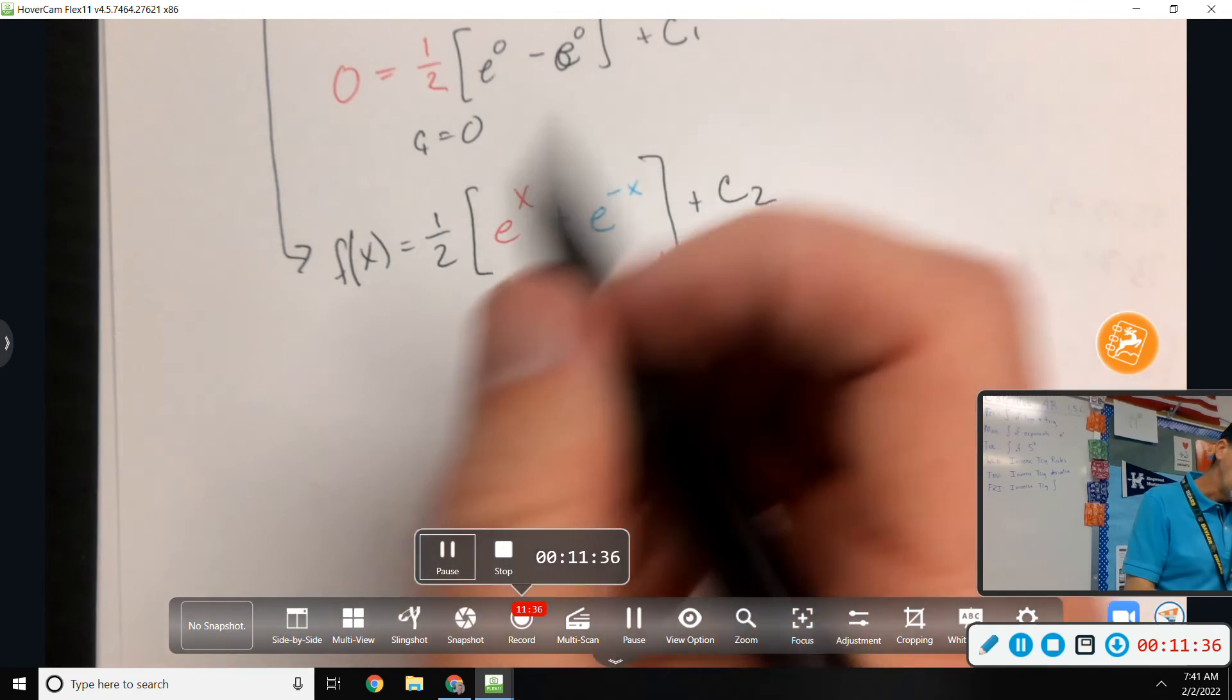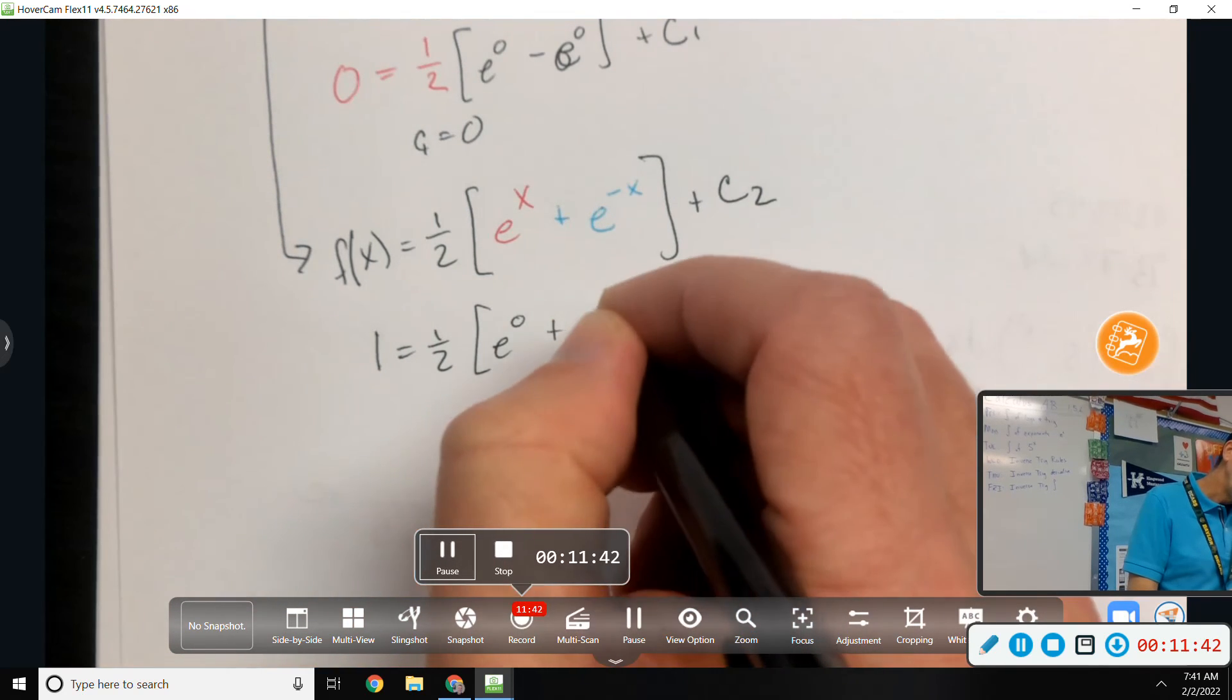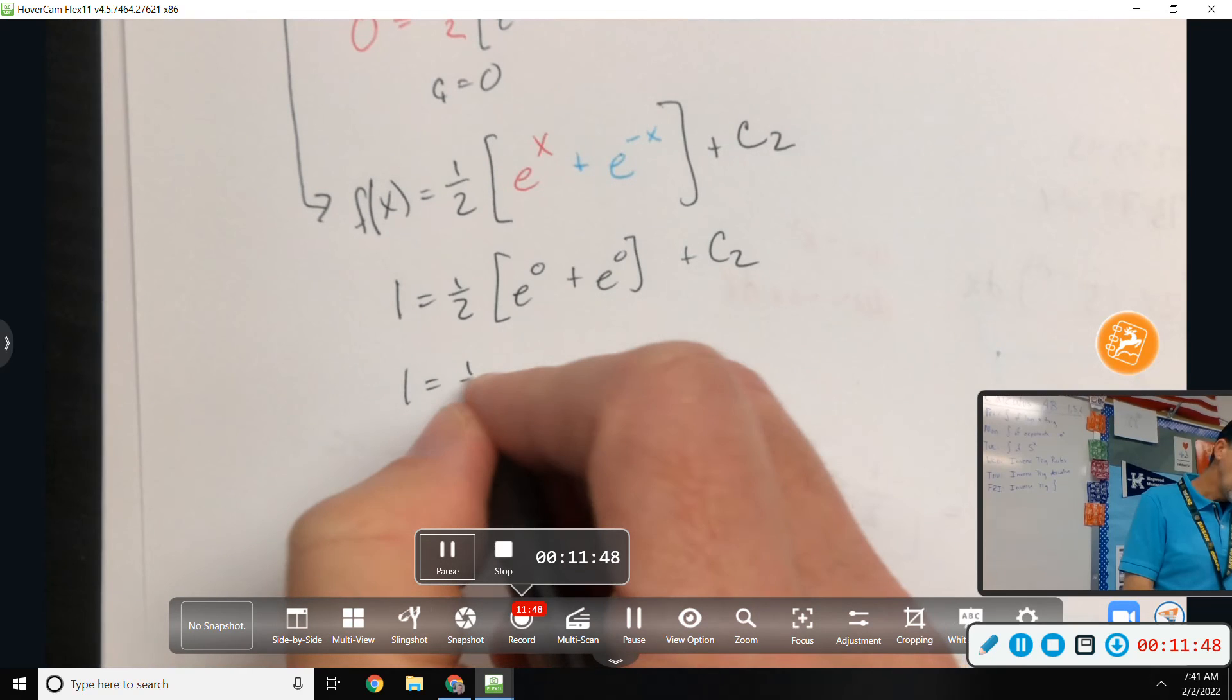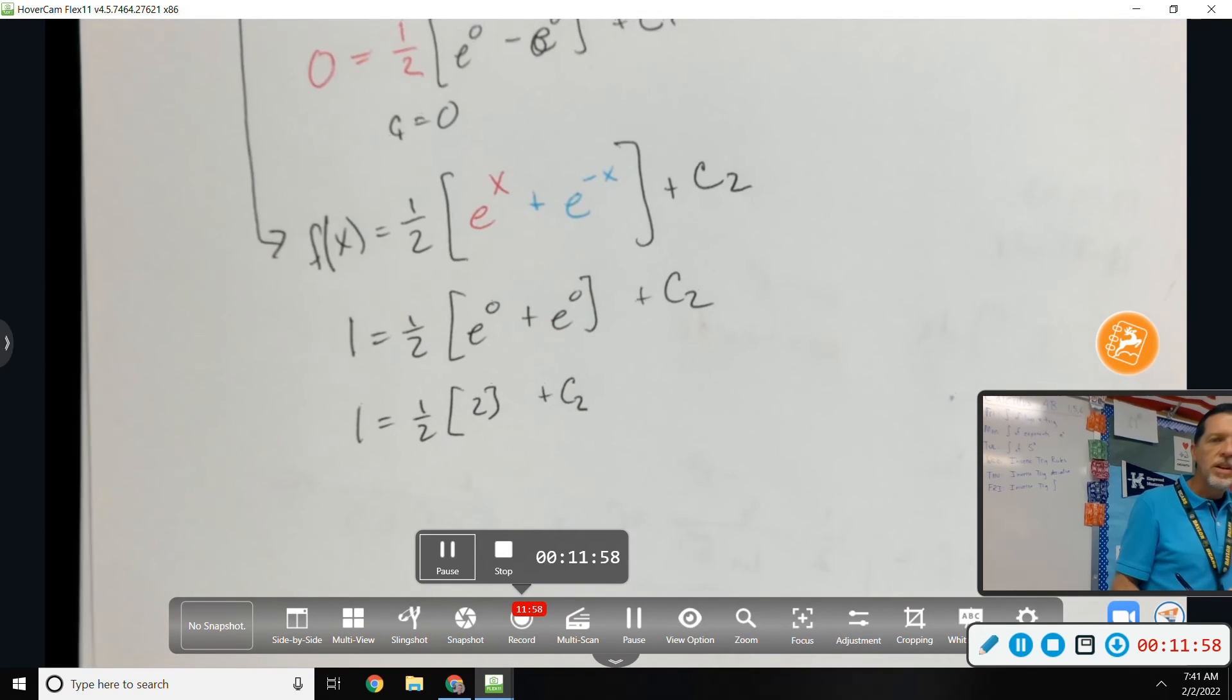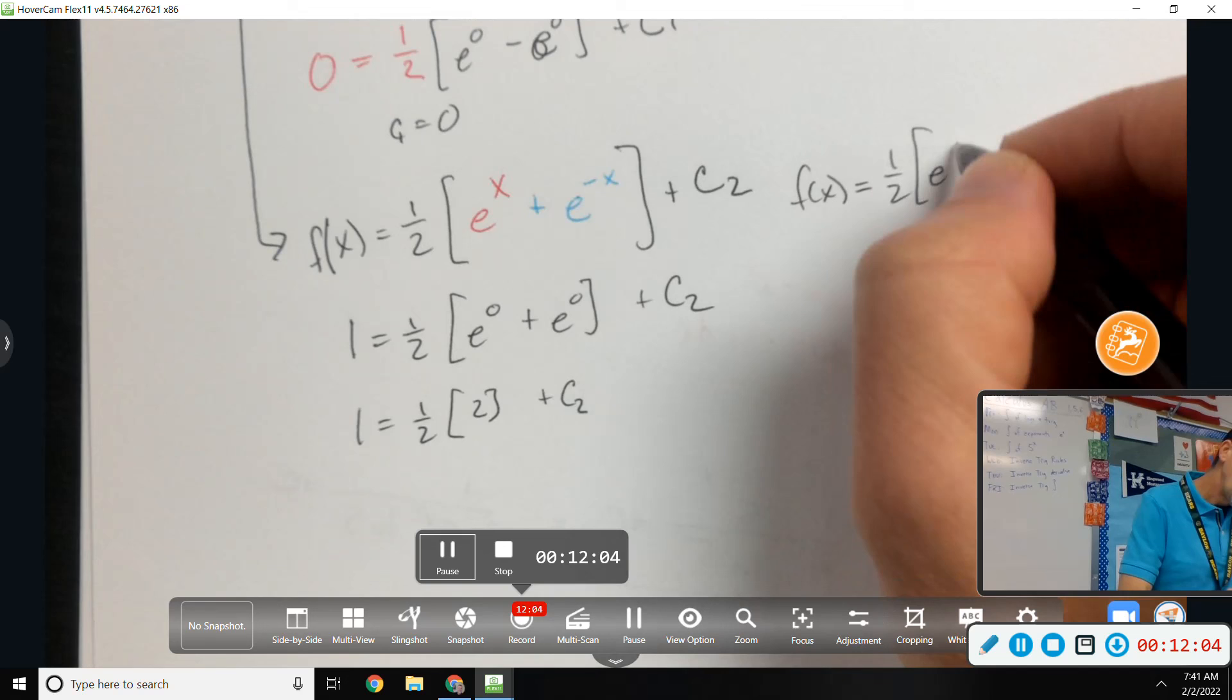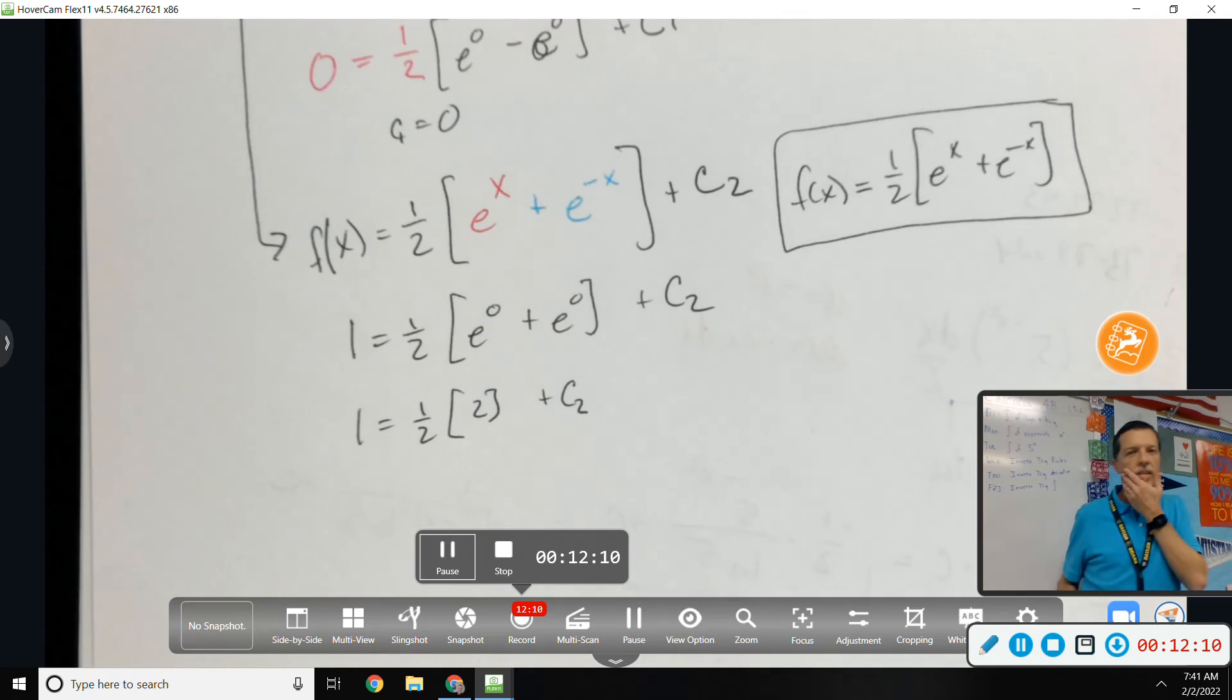This time, if I plug in 0, I get 1. So 1 equals 1 half e to the 0 plus e to the 0 plus c2. And they did us another favor here. c2 also equals 0. So our final answer for f is that. As a teacher, I kind of don't like that both c's were 0. That means you could have ignored the c altogether and not even thought about it and still would have gotten the right answer.